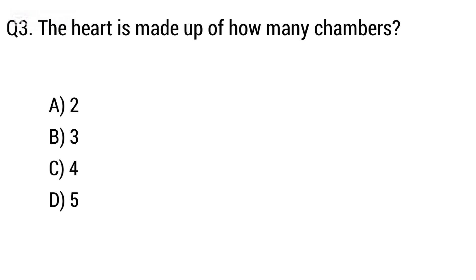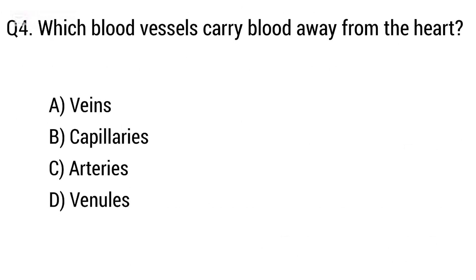Question 3: The heart is made of how many chambers? Option A: 2, B: 3, C: 4, D: 5. The right answer is option C, 4. Question 4: Which blood vessel carries blood away from the heart? Option A: vein, B: capillaries, C: arteries, D: venules. The right answer is option C, arteries.